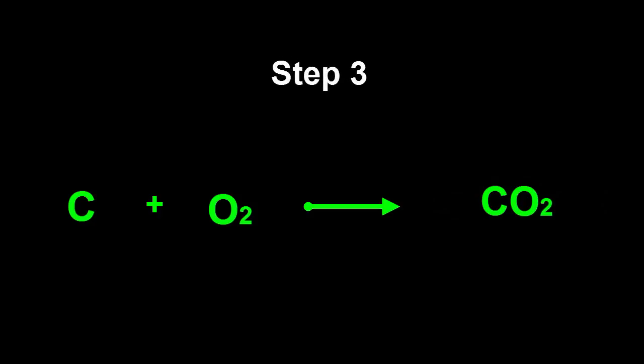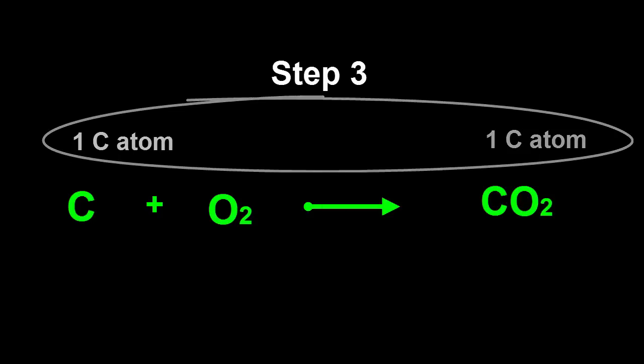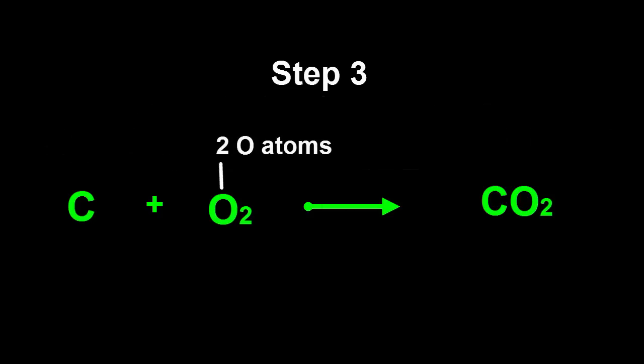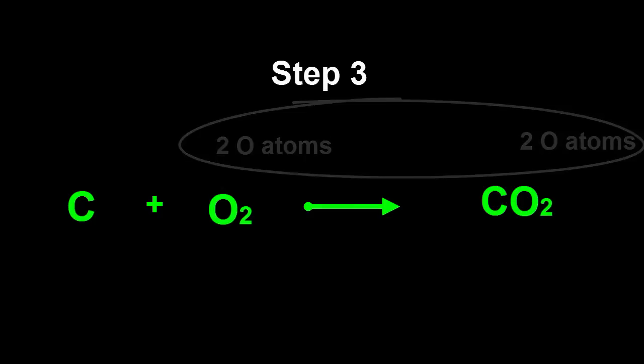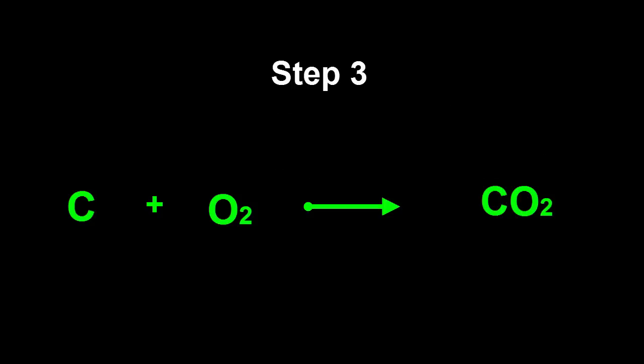Step 3 is to pick an atom that isn't balanced. Hang on, carbon and oxygen are both balanced. There's one carbon on the left hand side, and also one on the right hand side, inside the CO2 molecule. There are two oxygen atoms on the left hand side, in the O2 molecule, and two oxygen atoms on the right hand side, inside the CO2 molecule. This is an unusual situation where we don't have to change any of the coefficients in front of the formulas in order to balance it. It's already balanced.